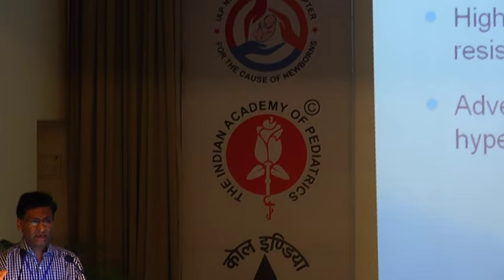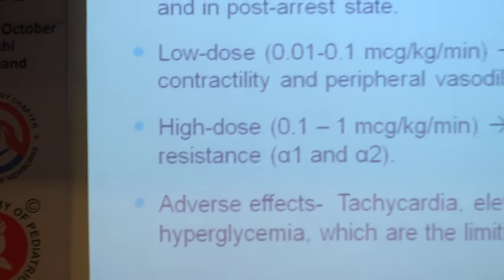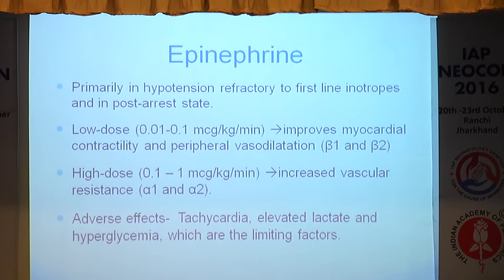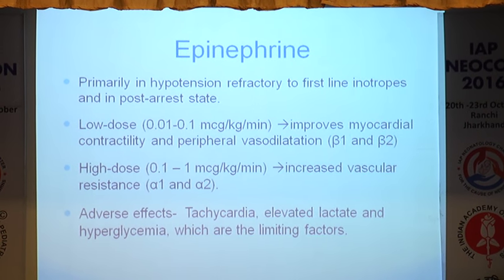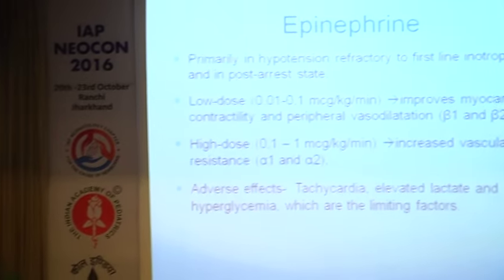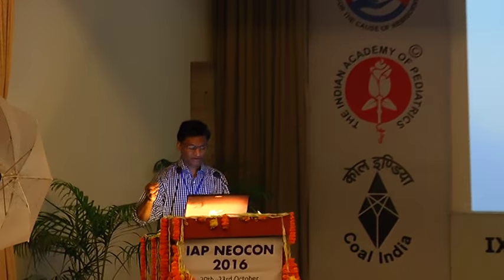Epinephrine has been traditionally used in hypertension refractory to first-line inotropes and in the post-cardiac state. At low dose, up to 0.1 micrograms per kg per minute, it improves myocardial contractility and causes some peripheral vasodilation. But if you go beyond 0.1, it has increased vascular resistance and works as a pure vasopressor. We cannot use epinephrine for a long time because of its high potential for adverse effects: tachycardia, increased myocardial oxygen requirement, and many other things.